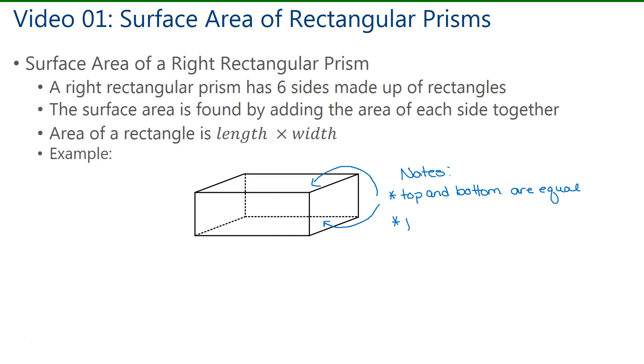Now the same thing goes for the front and the back. Front and back are equal as well. So if you find the area of the front rectangle and the area of the back rectangle, they will be the same. And then the two sides that are left over, they are equal as well.